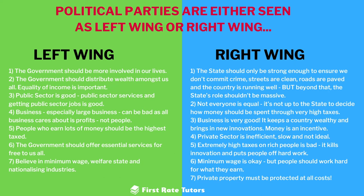This also contributes to the idea of equality. With a high taxation system, there won't be a vast gap between those who get an amazing private school education because their parents can afford it versus those who don't get a great state education. Everyone gets a similar level of education because state schools are better funded, and we all get access to healthcare. Generally, left-wing people want to see less of a divide between the wealthy and the poor, or between the upper, middle and working classes.